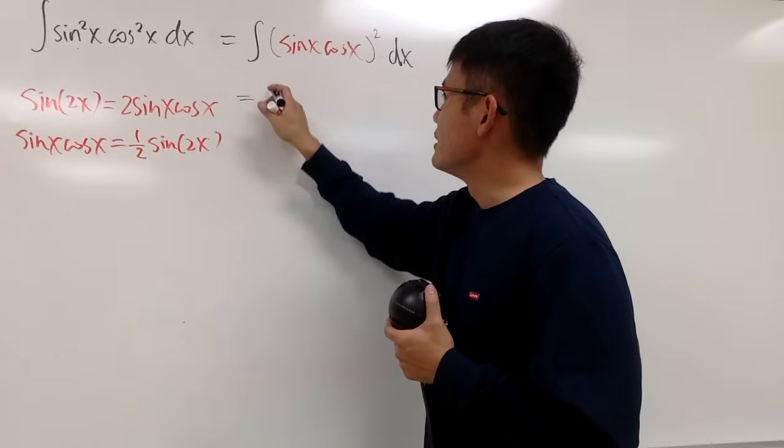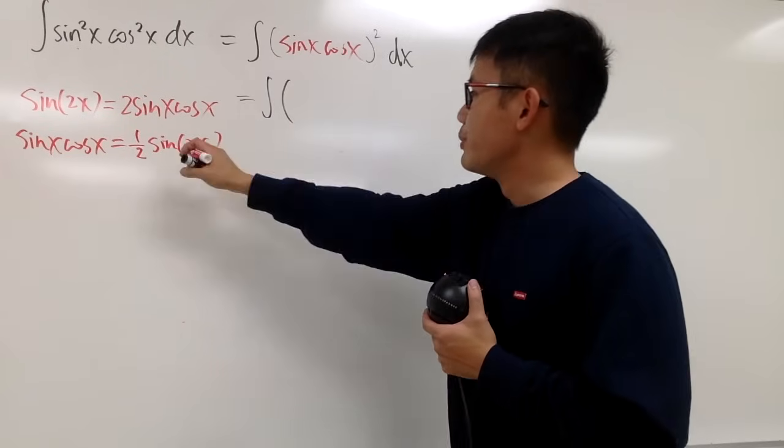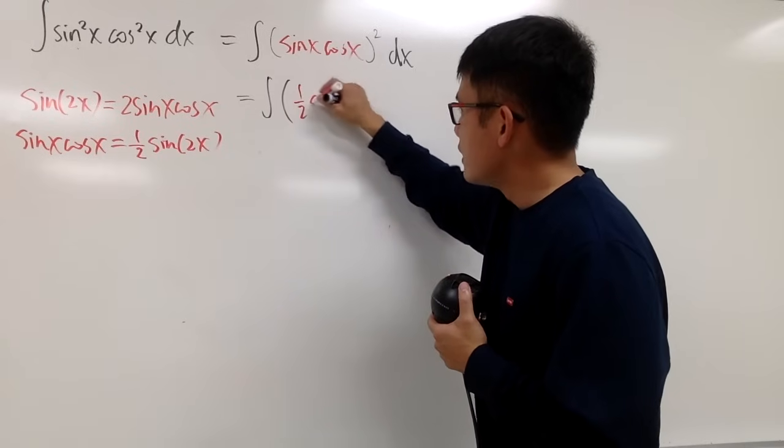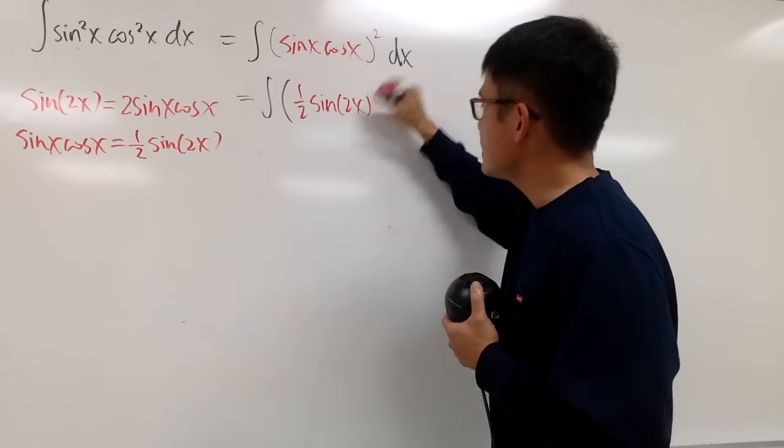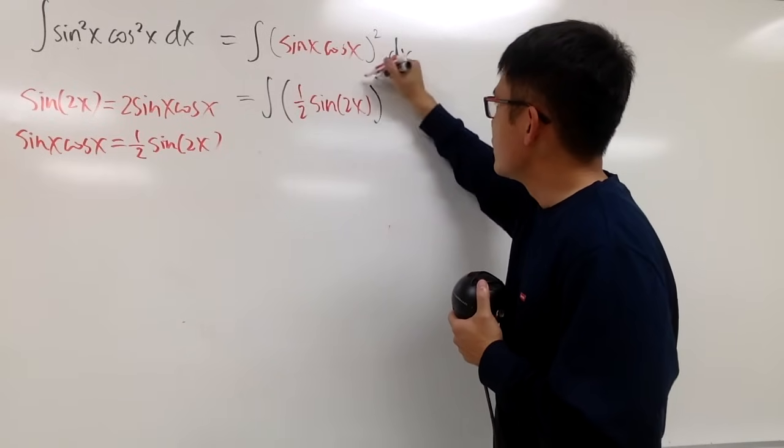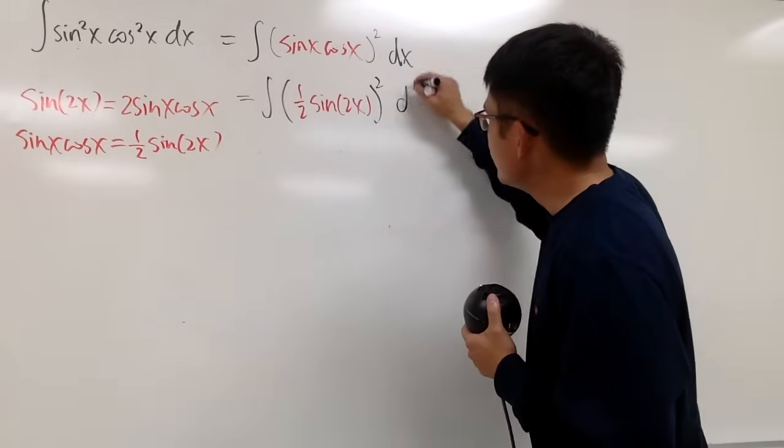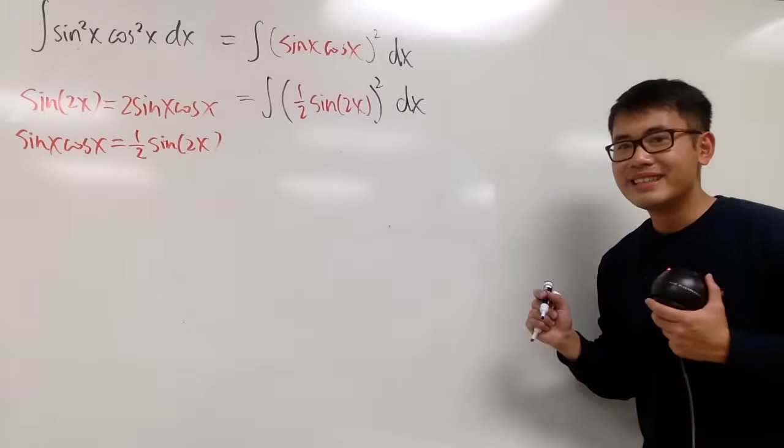So, to continue, this is the integral of, let's put this inside as 1 half times sine of 2x, like this. And then don't forget, we still have to square that. And, of course, don't lose your dx, neither.